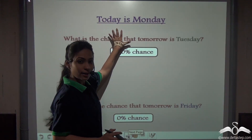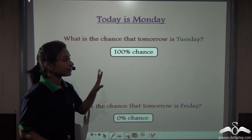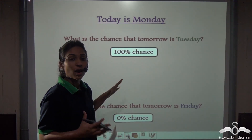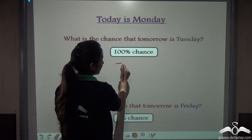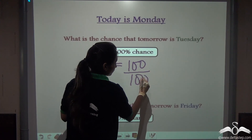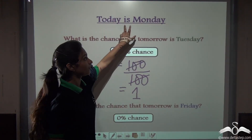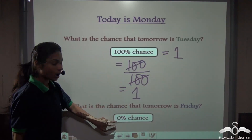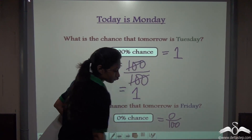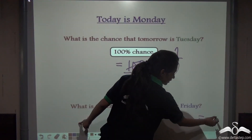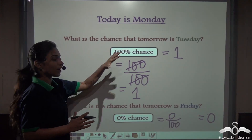So if today is Monday, the chance of tomorrow being Tuesday is 100% and the chance of tomorrow being Friday is 0%. In probability, we always write values as a fraction or decimal. So 100% can be written as 100/100, which gives us 1. The probability of tomorrow being Tuesday if today is Monday is 1. And 0% can be written as 0/100, which gives us 0. So the probability that tomorrow is Friday if today is Monday is 0.